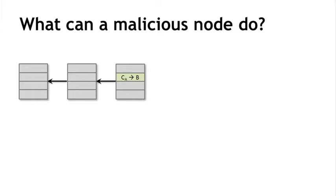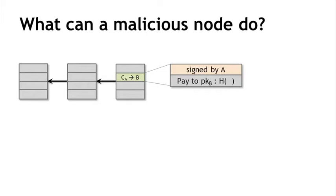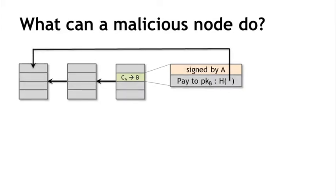Let's zoom into this in a bit more technical detail. A transaction is a data structure that contains Alice's signature, an instruction to pay to Bob's public key, and also a hash. This hash represents a pointer to the transaction where Alice originally received that coin from somebody else, and that must be a pointer to a transaction included in some previous block in the consensus chain. There are at least two different types of pointers in this diagram: blocks that include a hash of the previous block they're extending, and transactions that include a pointer to the previous transaction where the coin came from.